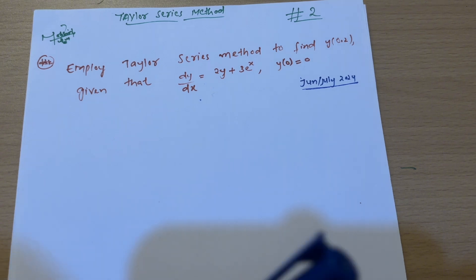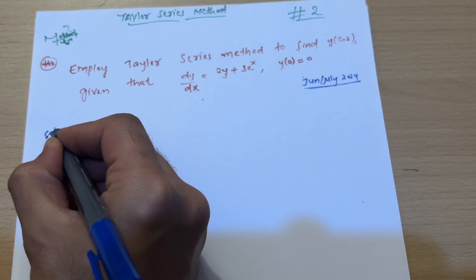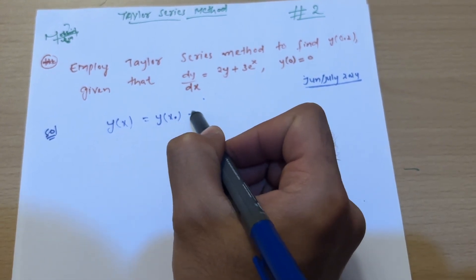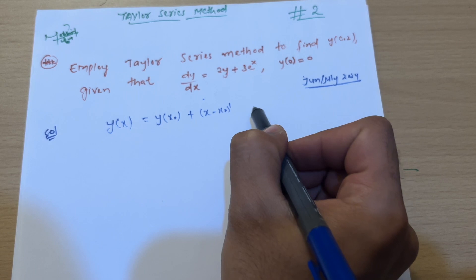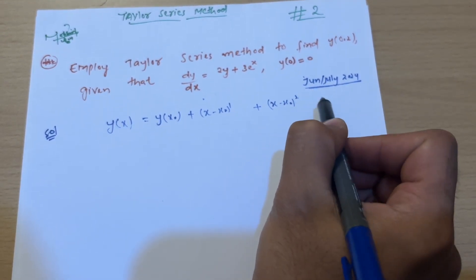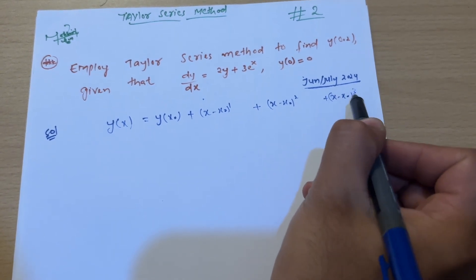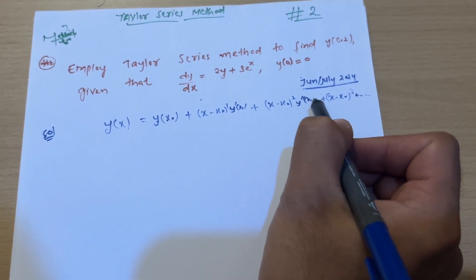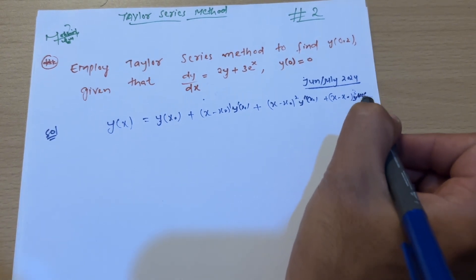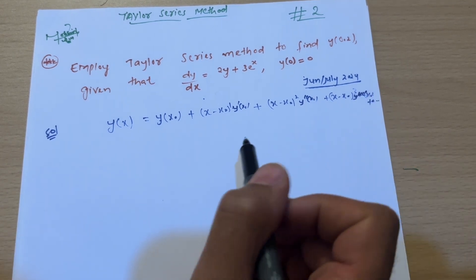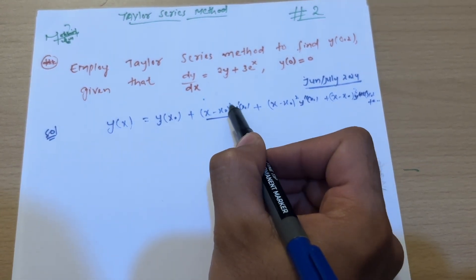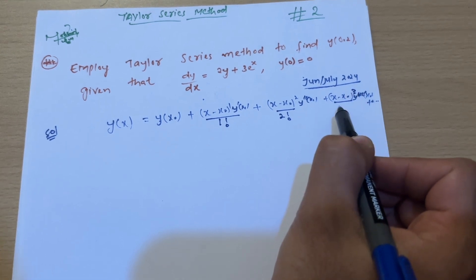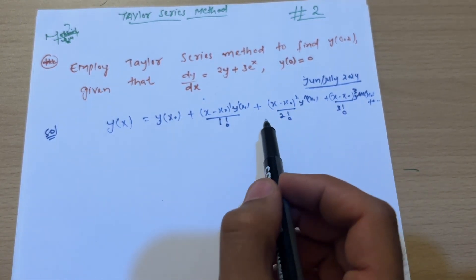Let us solve this question. First, recall the Taylor series formula: y(x) = y(x₀) + (x − x₀)/1! · y'(x₀) + (x − x₀)²/2! · y''(x₀) + (x − x₀)³/3! · y'''(x₀) + and so on. Here we have y(x₀), y'(x₀), y''(x₀), and y'''(x₀) with their respective factorial denominators.